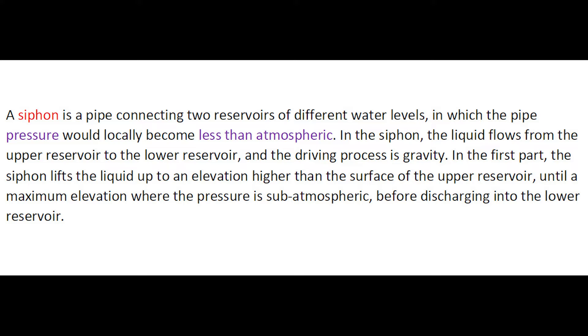A siphon is a pipe connected to reservoirs of different water levels, in which the pipe pressure would locally become less than atmospheric. In the siphon, the liquid flows from the upper reservoir to the lower reservoir by gravity.